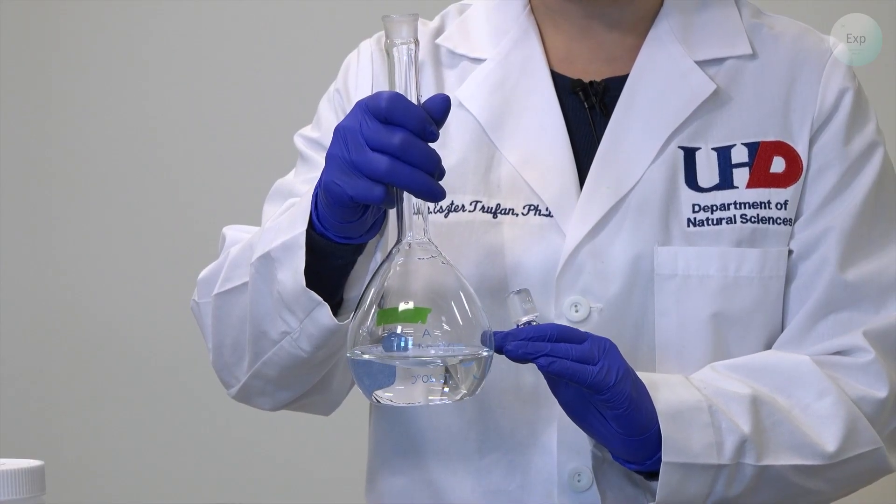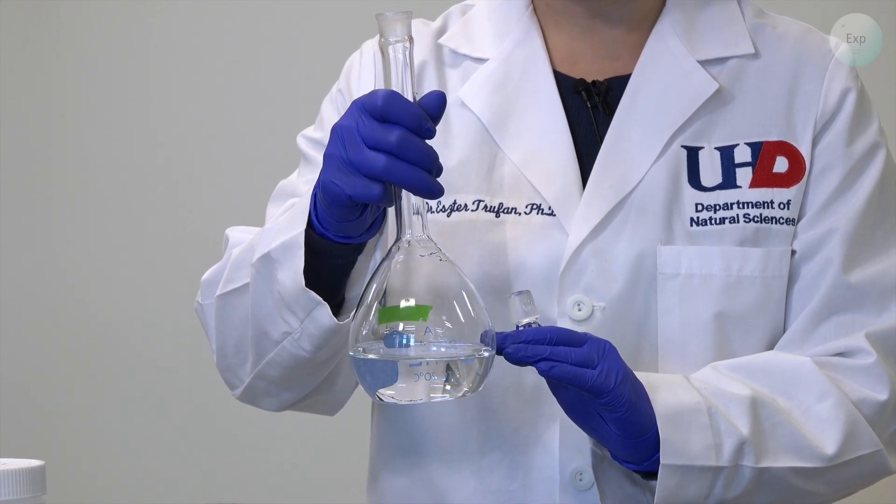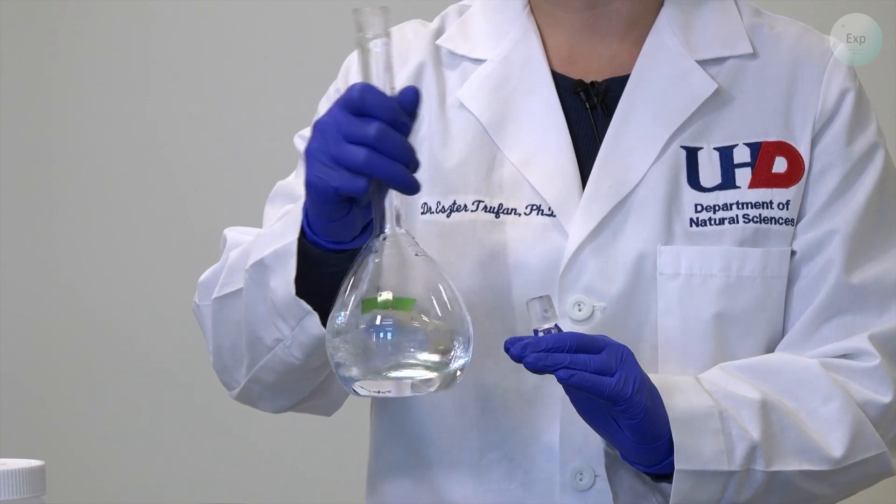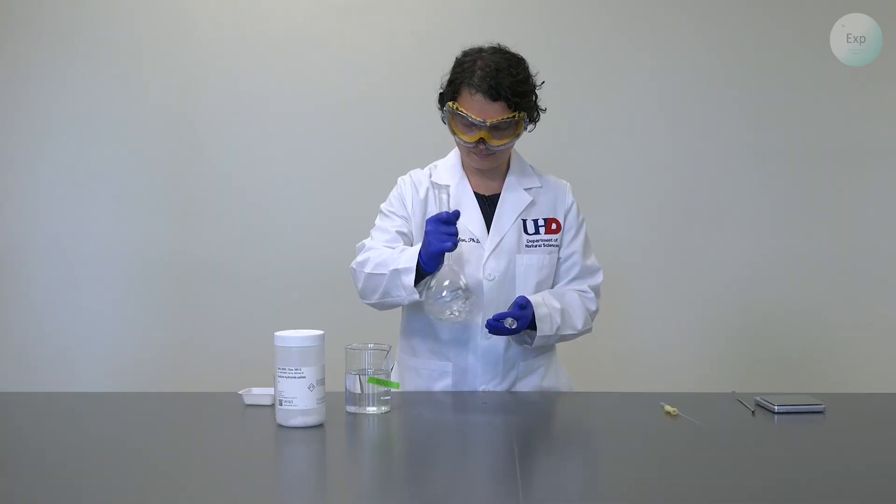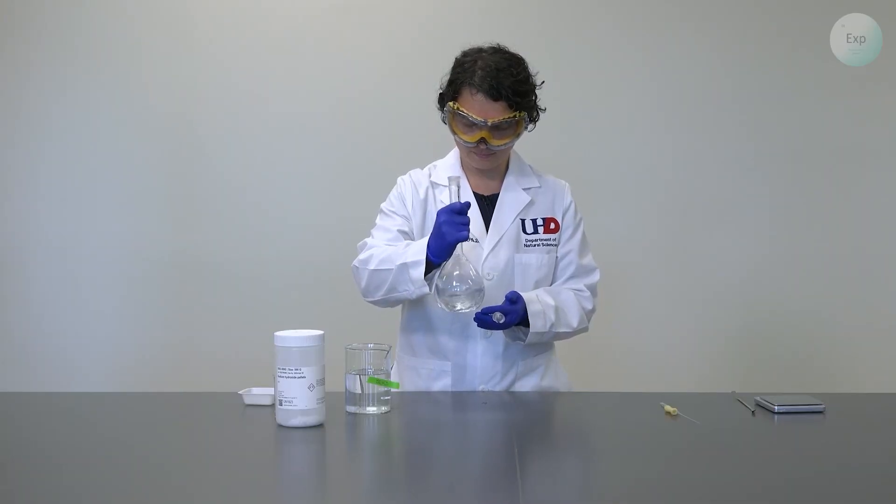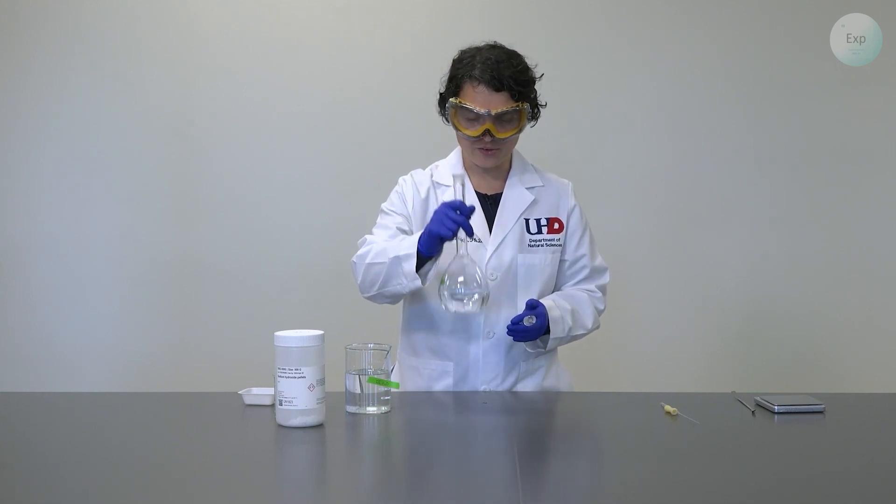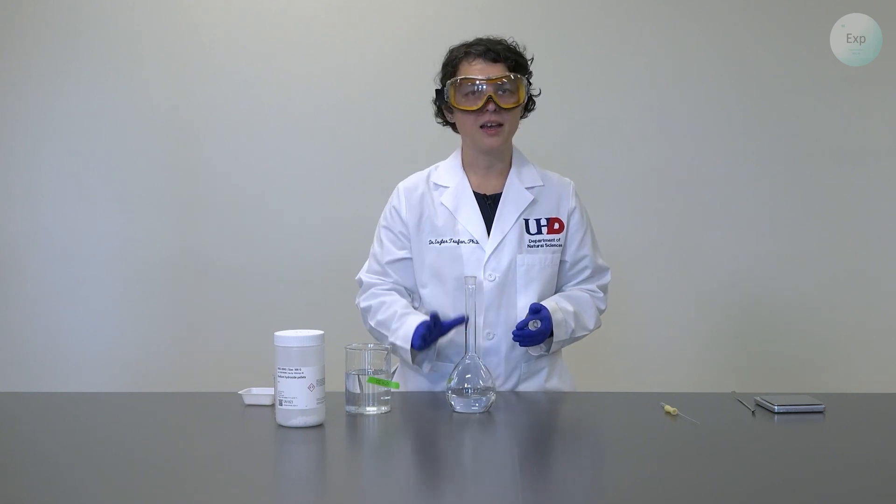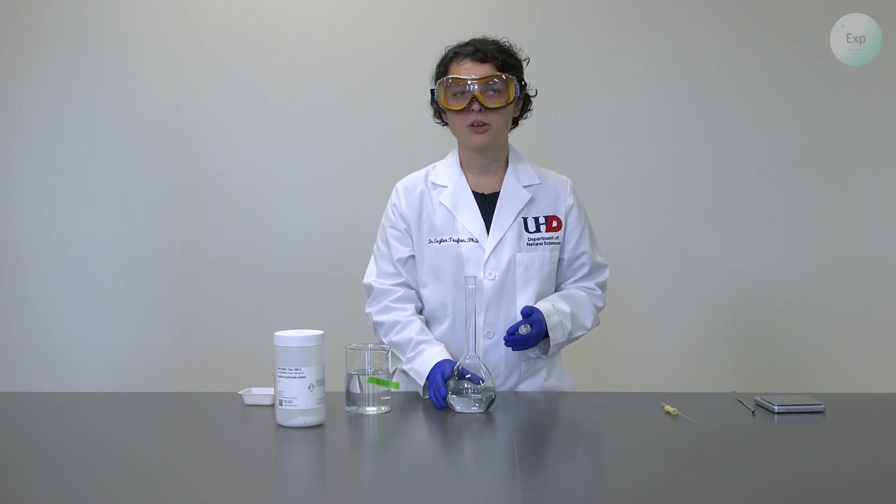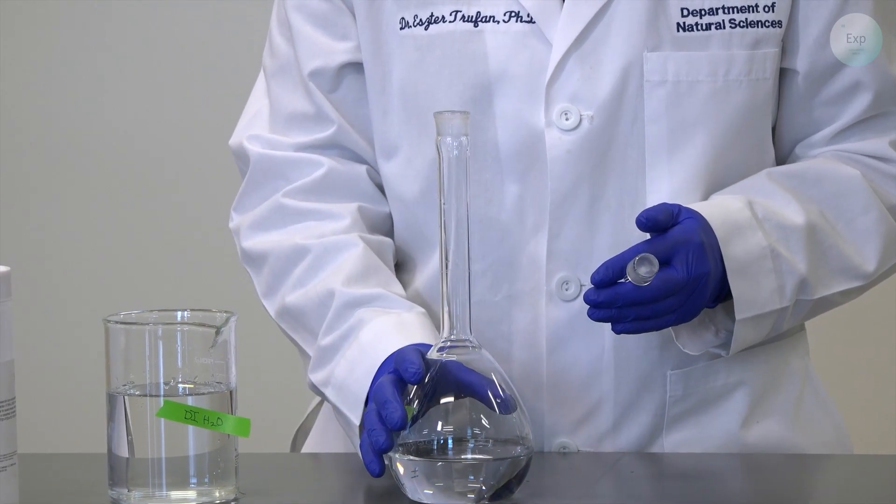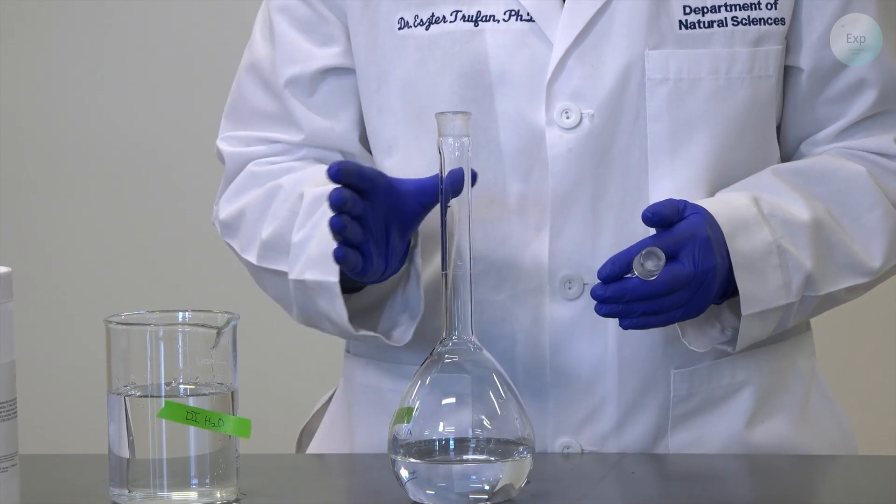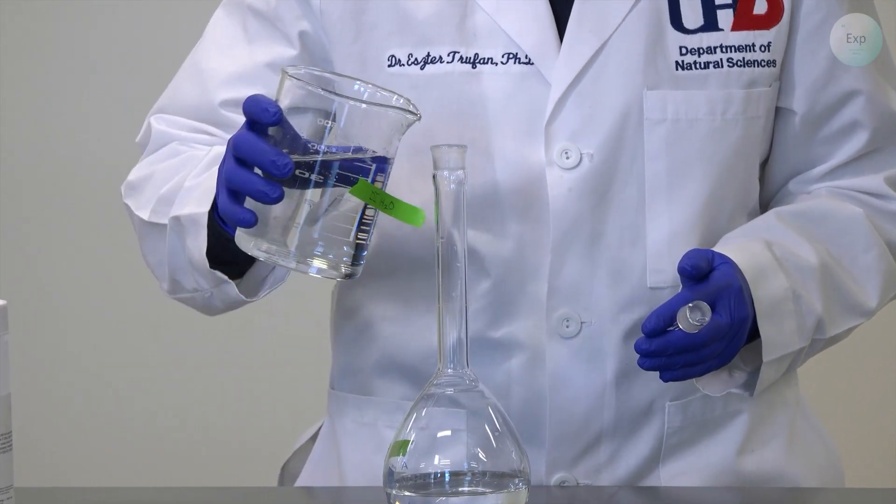And on the first addition, we don't want to add too much water because we want to retain the ability to swirl vigorously. The sodium hydroxide now is fully dissolved, and I have a homogeneous solution. For the next portions, we just keep adding the deionized water and swirling until the solution becomes homogeneous.